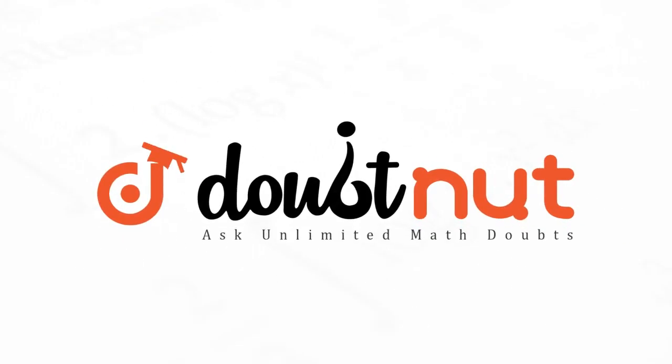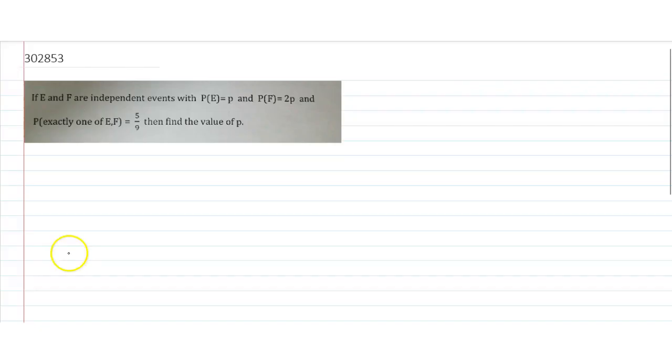I think we have a probability question. If E and F are independent events with P(E), probability of E, and event probability given P of E is equal to small p, and F.